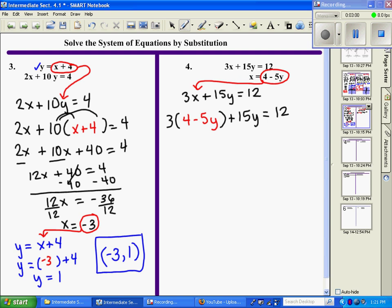Now we are just simply distributing: 12 minus 15y plus 15y equals 12. Add like terms, and these cancel each other out, so we have 12 equals 12. Now this is one of our special cases where we lose a variable and we're just left with two numbers. This is a true statement, therefore it's always true. This is an all-reals answer.